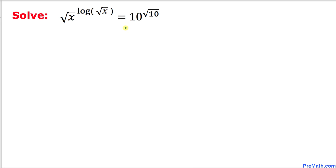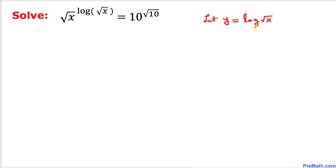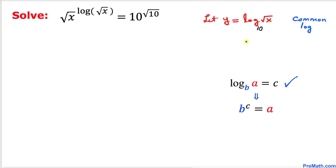Let's make a substitution. Let's focus on the exponent log of square root of x. I am going to let y equal to log of square root of x. The base for this log is missing — always remember if the base is missing, it has to be 10, which we call the common log. Now let's convert this logarithmic form into exponential form, which gives us: square root of x equals 10 power y.